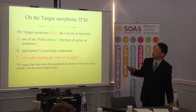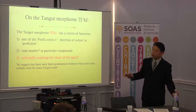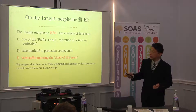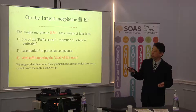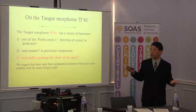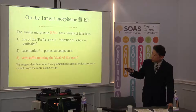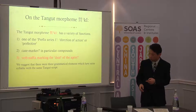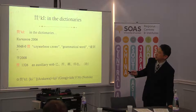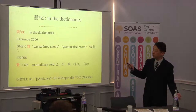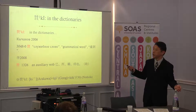We return to this Tangut morpheme 'qi'. Actually, it has various functions. First, as I said, it belongs to prefix series one, meaning direction of action or perfective. And in some cases, in particular compounds, it shows some case markers. The verb suffix marks the dual of the agent — we will now attest this. Actually, in previous dictionaries, I think there is not quite enough explanation for this morpheme. For example, in Professor Kuchanov, it is listed as a grammatical word, but that is all. Also, in Professor Li Fanwen, the explanation is probably not enough.